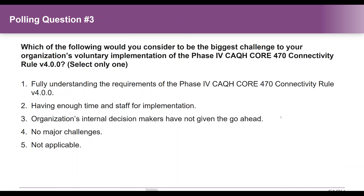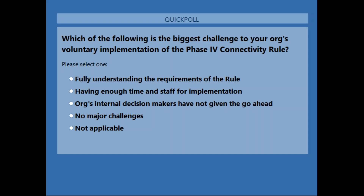This brings us to our third polling question: which of the following would you consider to be the biggest challenge to your organization's voluntary implementation of the Phase 4 CAQH Core 470 connectivity rule, version 4.0.0? This is a select-only-one question — there might be more challenges, but please select your biggest one.